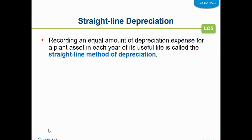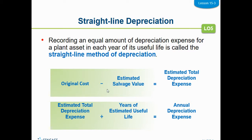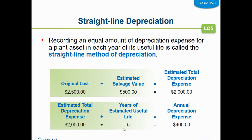What we're going to look at in this example is what they call straight-line depreciation. Straight line is the easy one — you just record an equal amount of depreciation expense each year. Back to my car example: if you have $22,000 of depreciation over 10 years, you take $22,000 divided by 10 and depreciate an equal amount each year. The formula is: original cost minus estimated salvage value equals the estimated total depreciation expense. In the book's example, the original cost was $2,500, salvage value is $500, so $2,000 needs to be depreciated over five years — that's $400 every year.